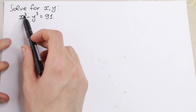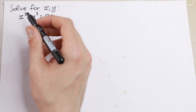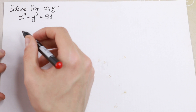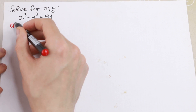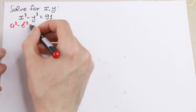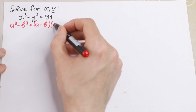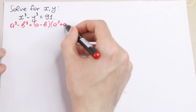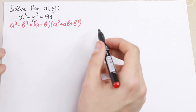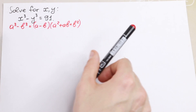We have x³ and y³, so the difference of cubes. We need to know the formula. If we have a³ minus b³, we will use the formula: a minus b, times a² plus ab plus b². This is the formula we need right here.